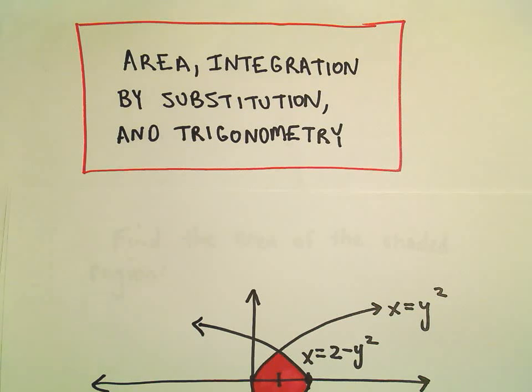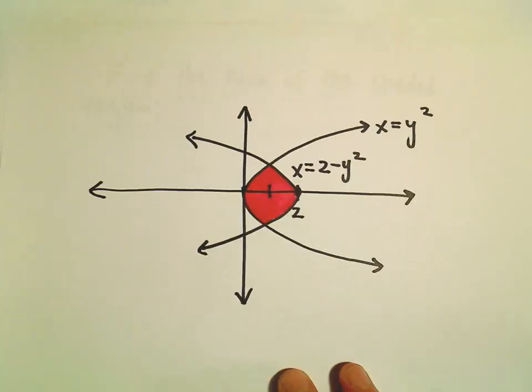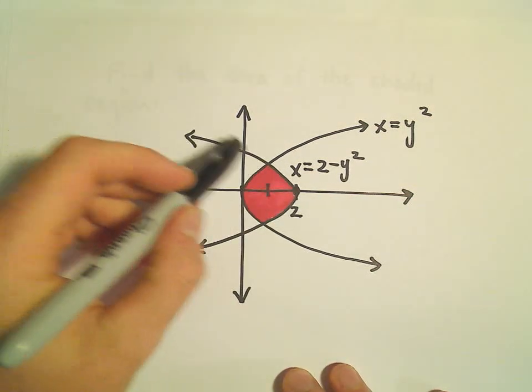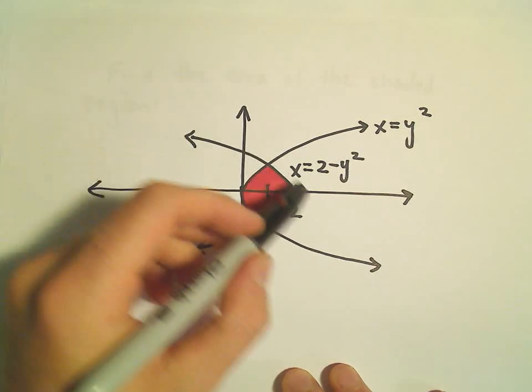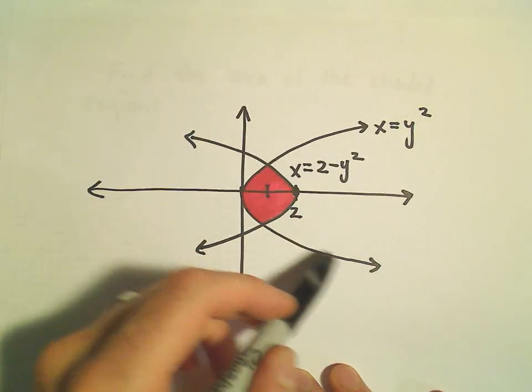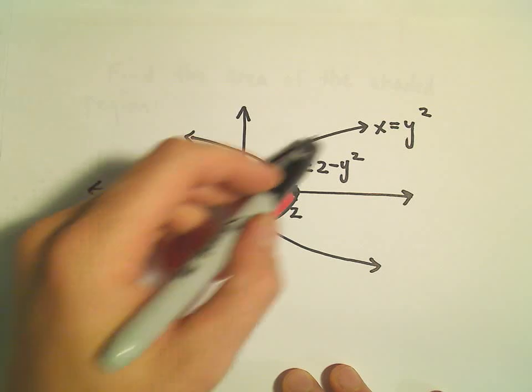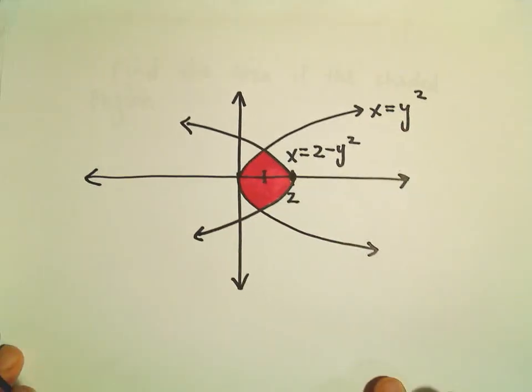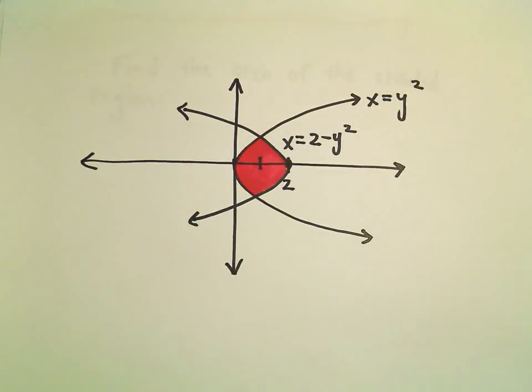Alright, in this video we're going to look at another example of computing the area bounded by a couple curves. So here on the right we have the curve x equals 2 minus y squared, and then on the left, kind of the left curve here of the region, is going to be the curve x equals y squared. And we want to compute, again, the area between these two curves.